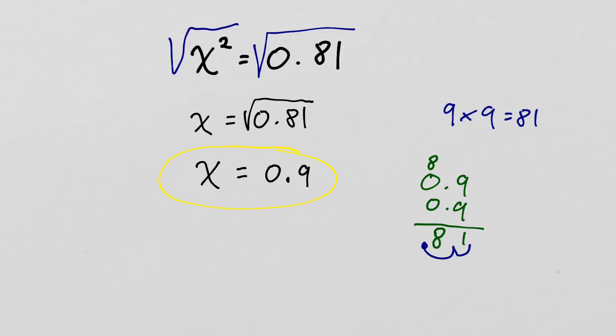So if you end up getting to a spot where you get the square root of a decimal number and your calculator is off, take a look at the decimal number and see if it reminds you of a perfect square. If it does, feel free to test it out because chances are that will be your answer.